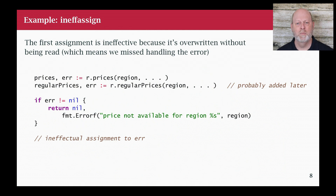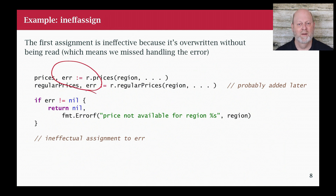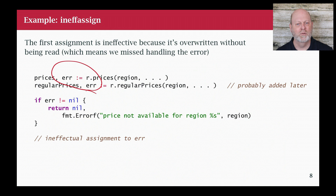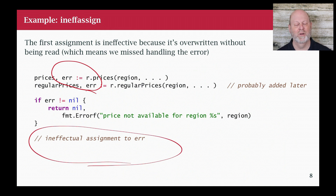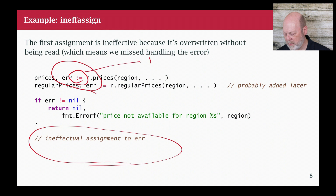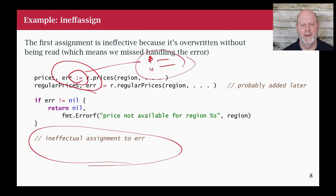Here's an example that helps you find bugs: IneffAssign, which stands for ineffectual assignment — an assignment that doesn't actually do anything useful. What it usually means is you've assigned to a variable you should have checked, and then copied another value on top of it. The most common place this happens is with errors: two calls where the second call overwrites the error from the first, and then you only check the error from the second call. The compiler will not tell you that's an error, but IneffAssign will say, hey, wait a second, you should look at this. It's a great tool for dealing with the shadowing issue from the short declaration operator.